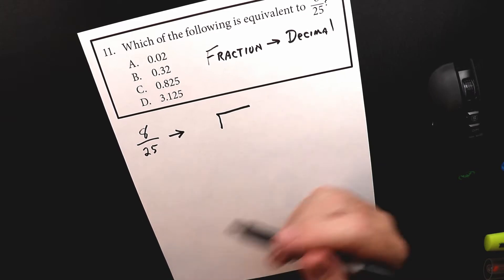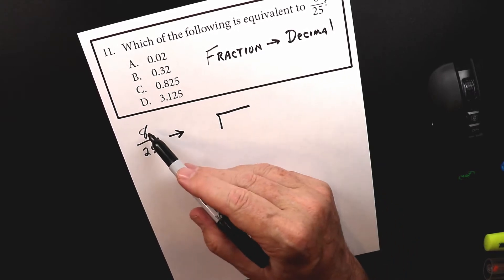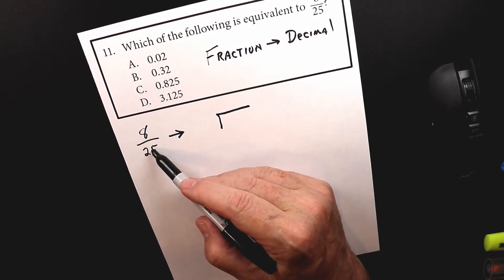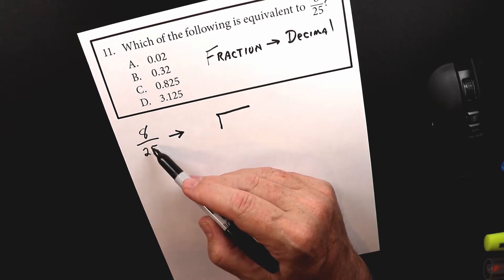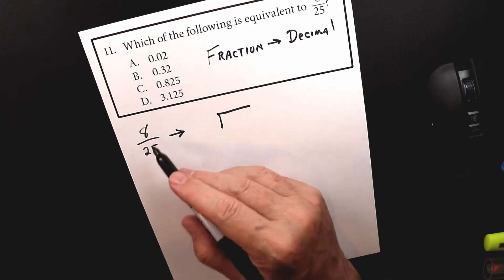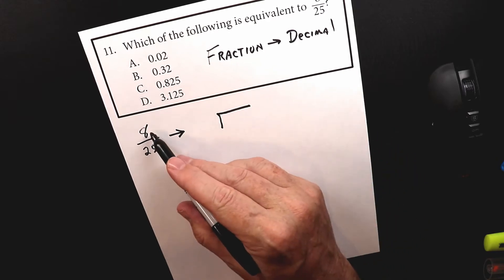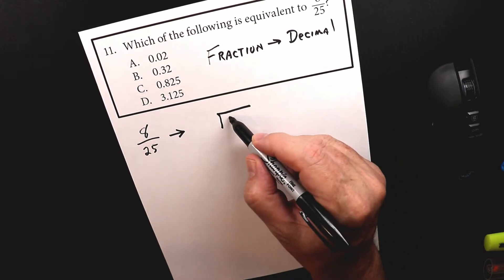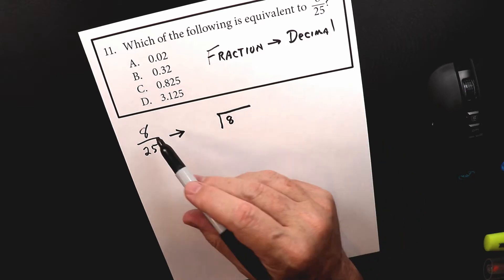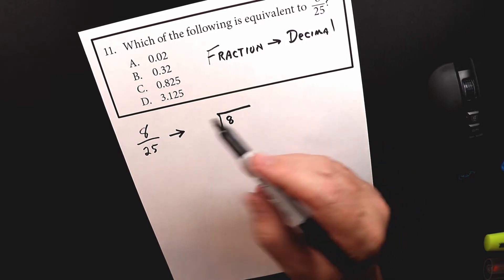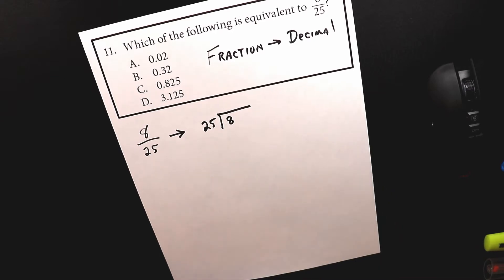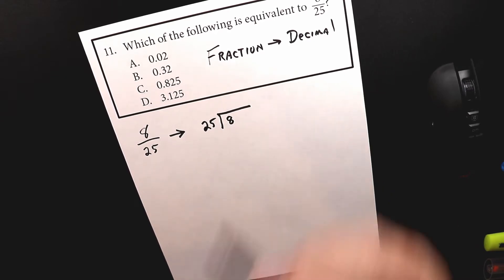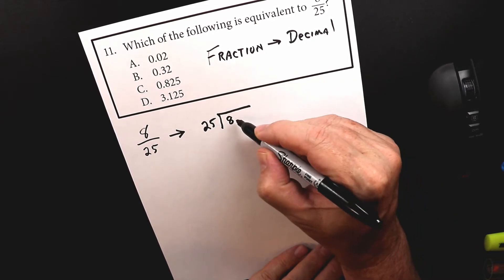We're looking at 8 over 25. If it was 25 over 25, we know that number would equal 1, so we know this number is going to be less than 1. In this case, we know to put the numerator inside the house and the denominator goes outside the house. Now let's put the decimal in there.